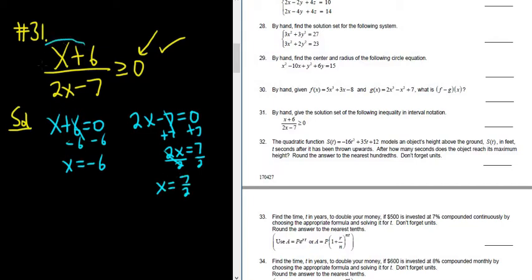Okay, so step 1, you set each piece equal to 0, and then you solve. Then you plot these on a number line. So negative 6 and then 7 halves.